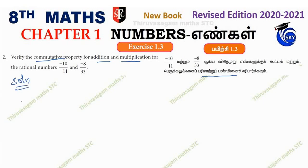Commutative property for addition. The property is A plus B equals B plus A. First we'll do addition. A plus B is first. A is minus 10 by 11, B is minus 8 by 33.